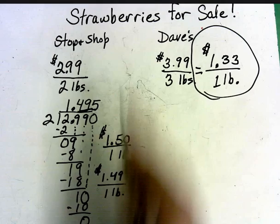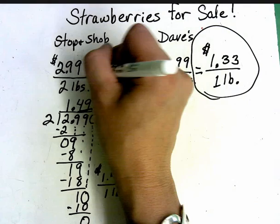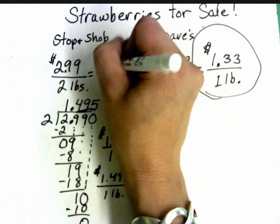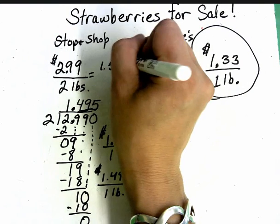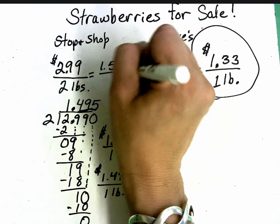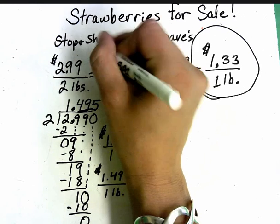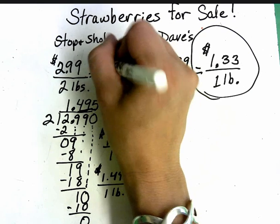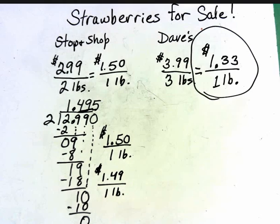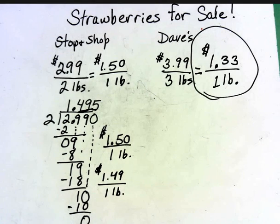This one, like Yara said, would be $1.50 per pound. Where am I going to go shopping, Tyler? Dave's. I am going to go to Dave's. Beautiful job, thanks for your help.